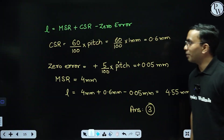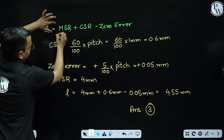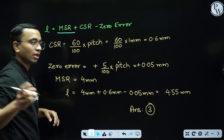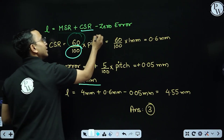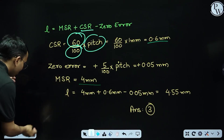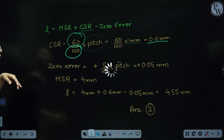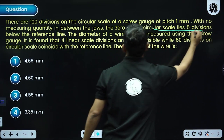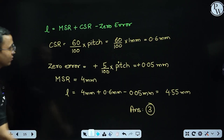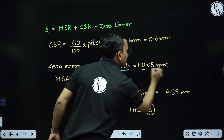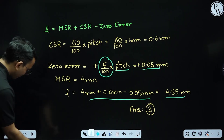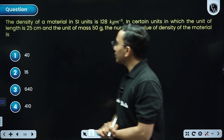Length = main scale reading + (circular scale / total divisions) × pitch. Main scale is 4 mm, circular scale shows 60 divisions, so 60/100 × 1 mm = 0.6 mm. For the zero error: zero of circular scale is 5 divisions below the reference line, meaning the zero error is positive, so zero error = +5/100 × 1 mm = +0.05 mm. Subtracting, the diameter comes out to be 4.55 mm.